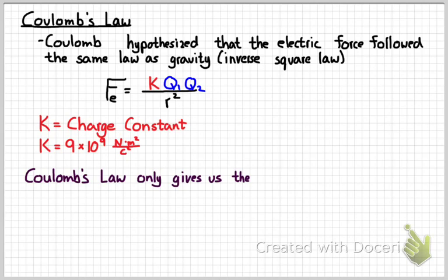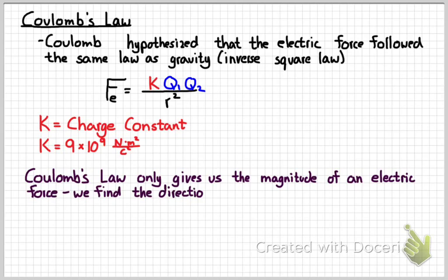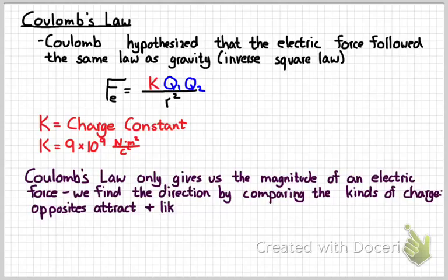We use Coulomb's law to figure out the magnitude of an electric force. It doesn't tell us anything about the direction. We use the rule that opposites attract and likes repel to figure out what the direction of the charges are. By knowing what kind of charge we have, we can determine the direction. We would not put in plus or minus signs into Coulomb's law.